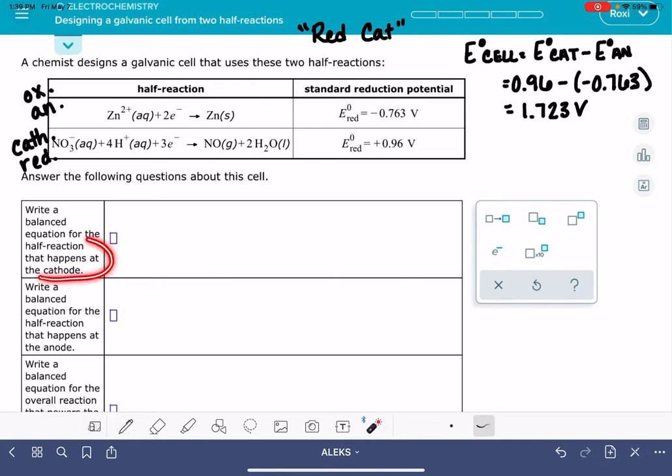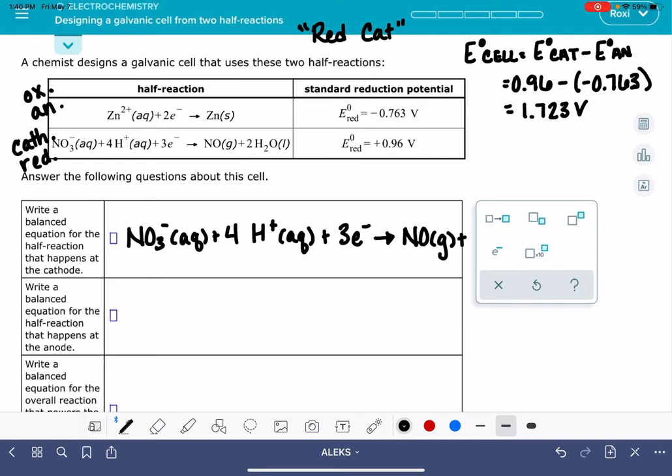So here we want to write the reaction that's happening at the cathode. We've already decided it's this reaction right here, and the cathode reaction is a reduction reaction because red cat. Reduction involves gaining electrons. Our reactants are adding with electrons. So this reaction, exactly the way that it's shown in this Aleks problem, this is the reaction that's taking place at the cathode. When you write this equation into this box, make sure that you're including the states. That's really important. Aleks needs you to not leave them out.